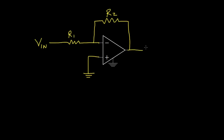We'll define the input voltage as the voltage relative to ground at one side of resistor R1, and the output voltage as the voltage relative to ground at the output of the op amp. This circuit employs negative feedback — we're taking the output and feeding it back to the negative input. When that happens we can use the model for an ideal op amp. The two main ideas are: first, the voltage at the positive and negative terminals are equal; second, the current flowing into or out of either terminal is zero.